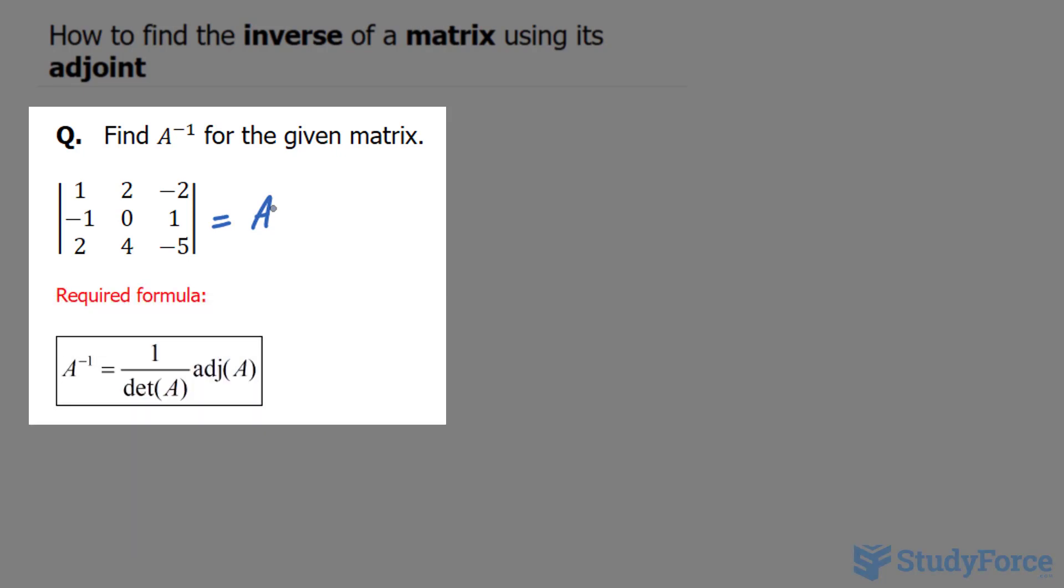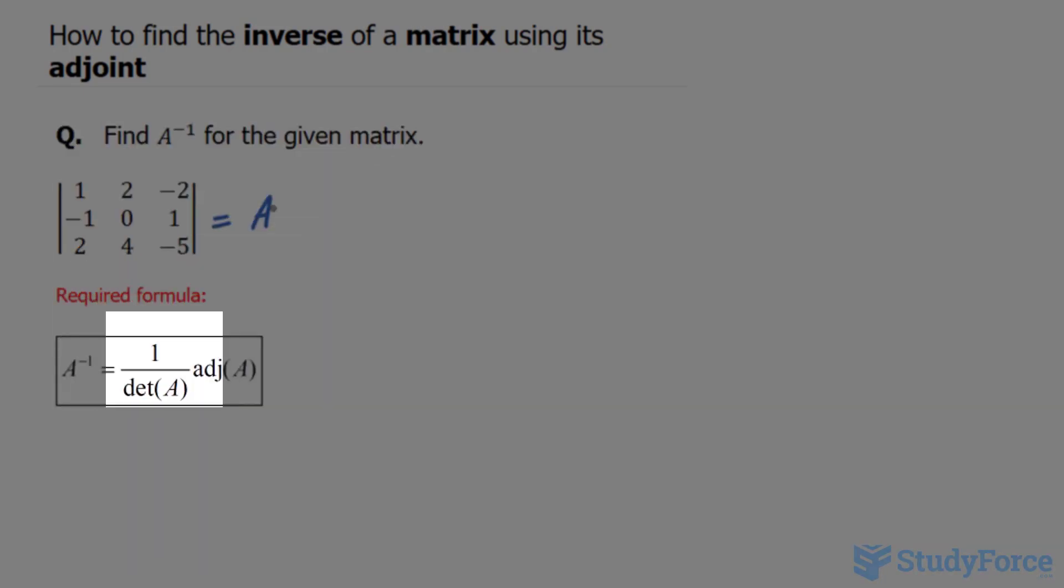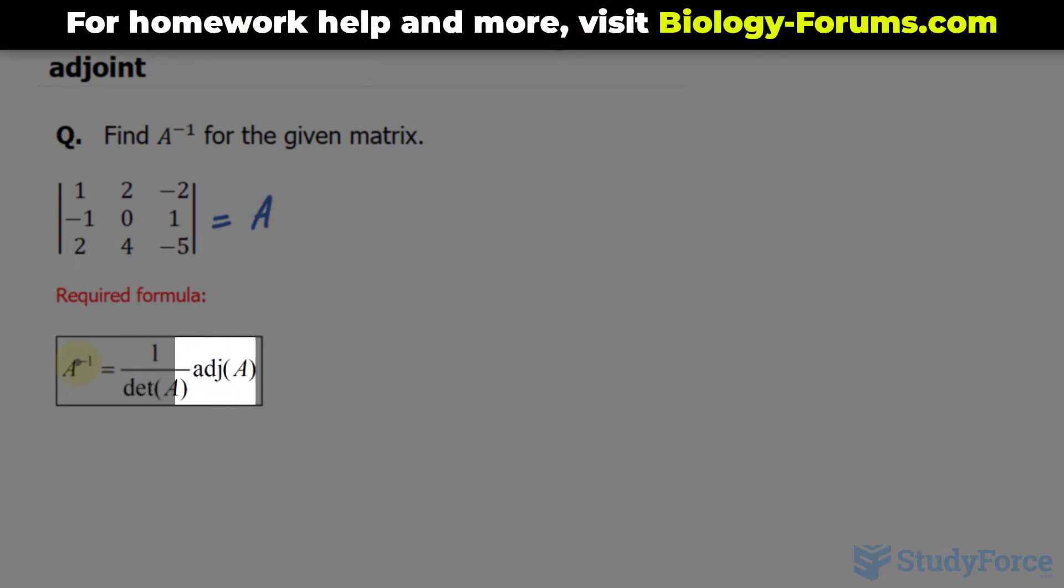According to the formula provided underneath, what you have to do is find a determinant of the matrix, reciprocate it, which is this part, and then multiply it by its adjoint.